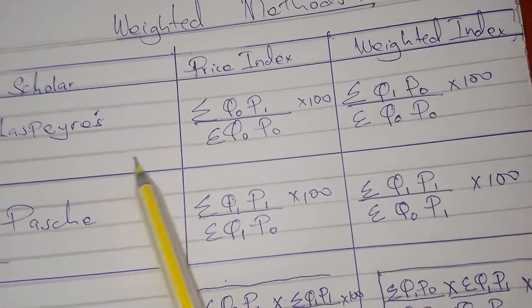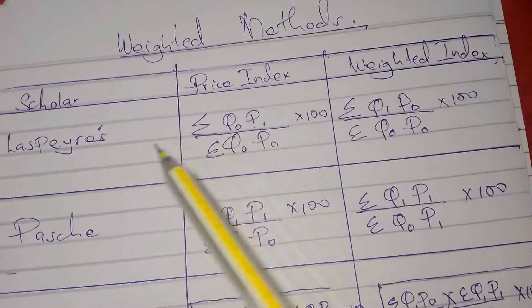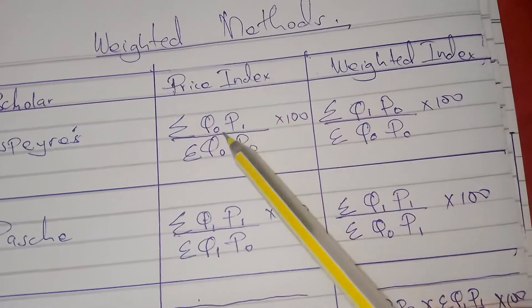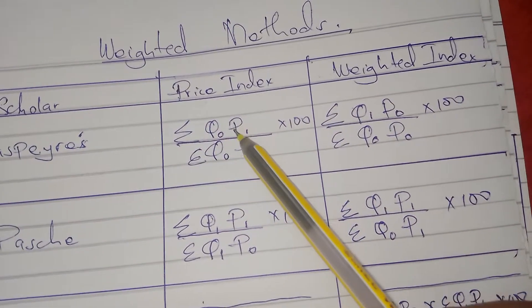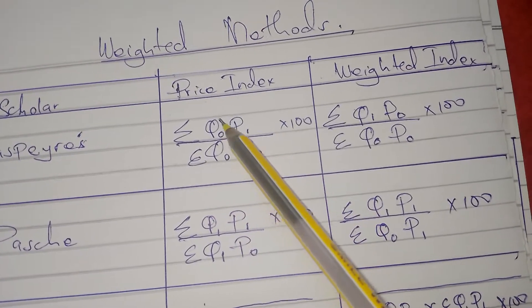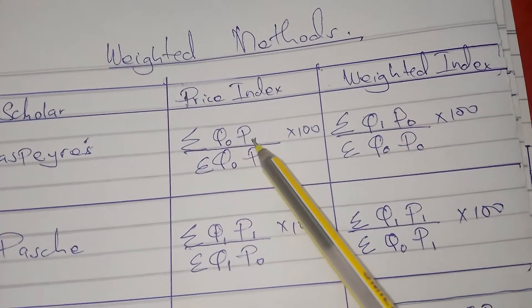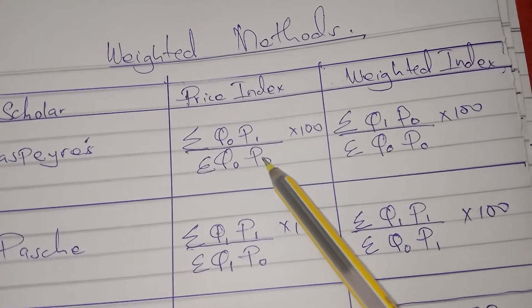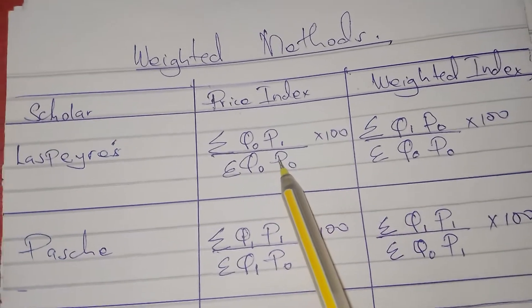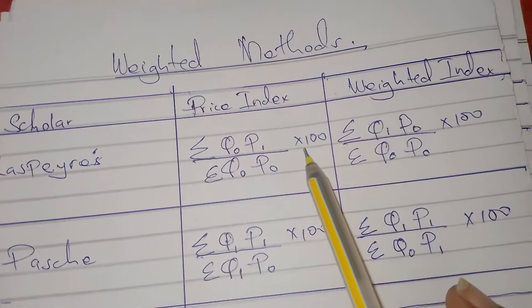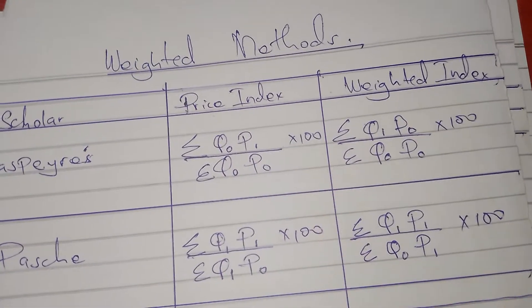In the case of the price index for the scholar called Spayless, the price index formula is: summation of q-naught times p1, divided by summation of q-naught times p-naught, times 100. Here q-naught is the quantity for the base year, p1 is the prices for the current year, and p-naught is the prices for the base year. This is the Spayless price index formula, used when applying the Spayless method.